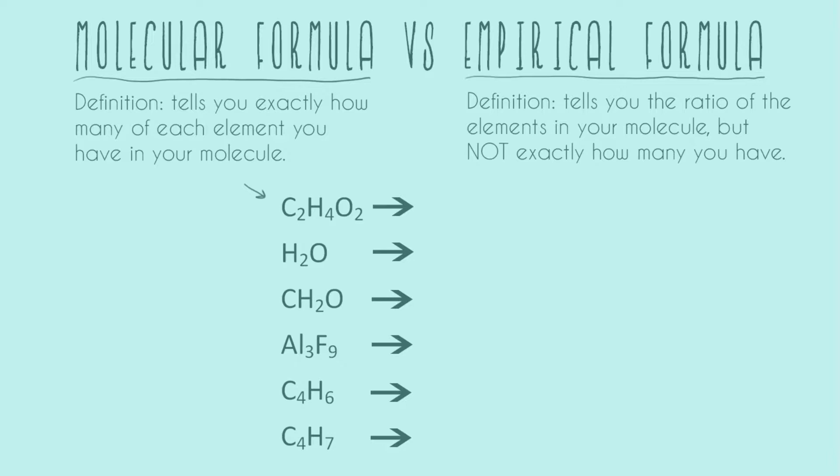And so now let's go over to the empirical formula. So the empirical formula tells you the ratio of the elements in your molecule but not exactly how many you have. So whenever you're looking at an empirical formula, you don't know exactly how many carbons, hydrogens, oxygens, or whatever else is in your molecule you have. All you know is the ratio to each other.